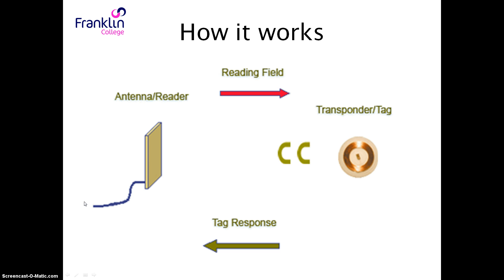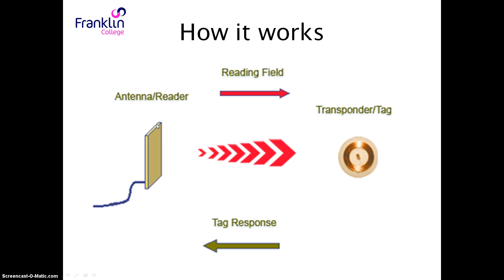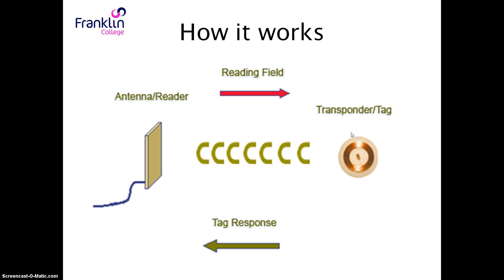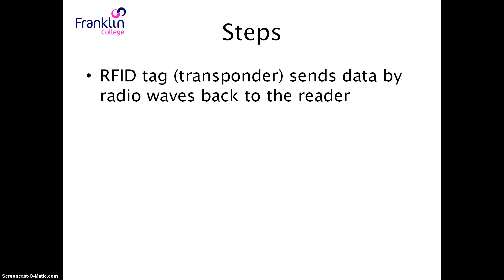Here's another diagram. The antenna of the reader sends out a radio wave signal. The transponder receives the radio waves, it induces an electrical current in the tag, and it sends the response back to the reader via radio waves. So the RFID tag transponder sends data by radio waves back to the reader. The key point to remember is that it's the radio waves from the reader that induce the electrical current in the tag.